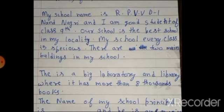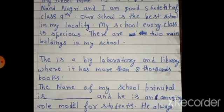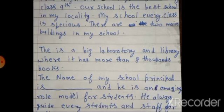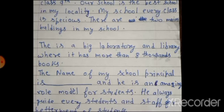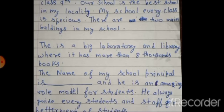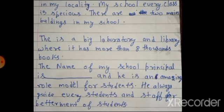There is a big laboratory and library which has more than eight thousand books. The name of my school principal is — write your school principal's name here — and he is an amazing role model for students. He always guides every student and staff for the betterment of students. Thank you for watching this video.